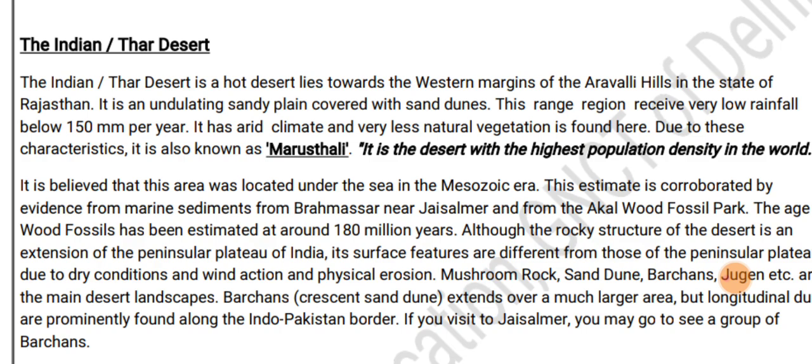Due to these characteristics, it is also known as the Marusthali. It is the highest population density desert in the world. The Indian Thar Desert is located on the western margin — in which region? In Rajasthan.